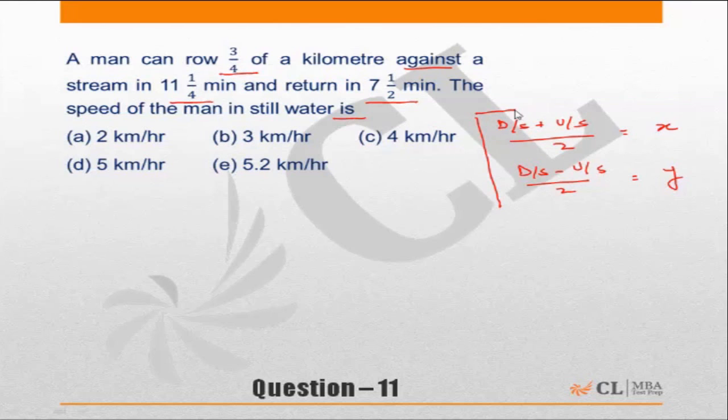So effectively this question is not about any concept but about calculation. You are able to do 3/4 of a kilometer against the stream, which means upstream, in 11 1/4 minutes, which is 45/4 minutes.